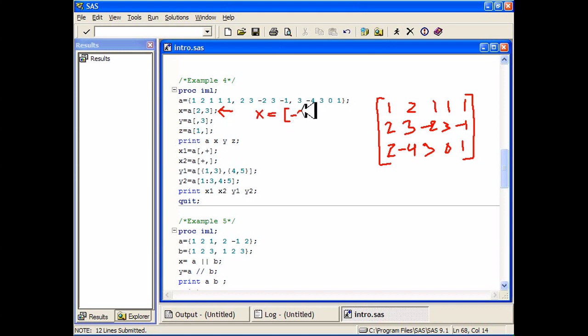If you want to grab a whole row at a time or a whole column at a time, you can do that with these commands. If you want that third column, Y is going to take the value 1, minus 2, 3. Similarly, Z will take the values 1, 2, 1, 1, 1. It will be a row vector.